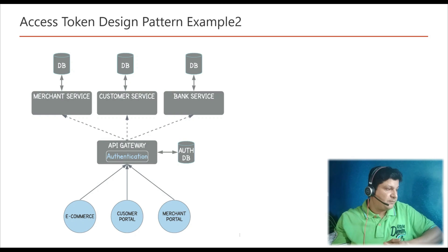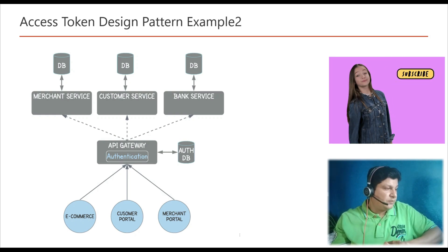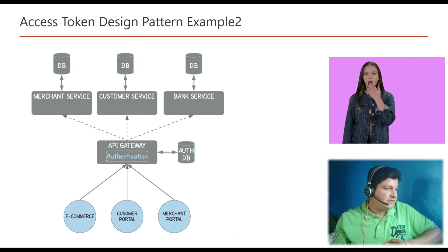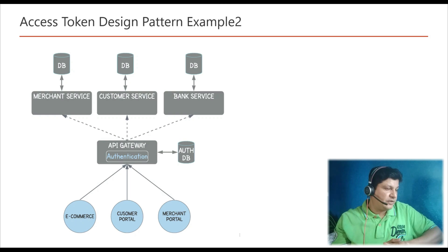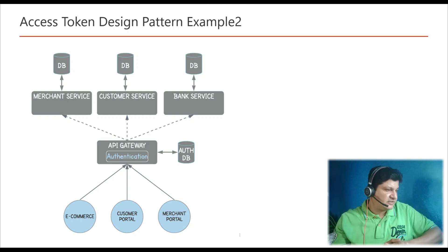It is the responsibility of the API gateway to define a policy and authenticate all incoming requests. The API gateway integrates with an auth DB, which can be any authentication provider — such as Amazon Cognito in AWS or any custom authentication server. All clients first go to the authentication server and request a token. On receiving a token, they send it in a header to the API gateway. The API gateway takes the token from the header and validates it through the authentication server. If the token is valid, the API gateway allows the request to pass through to the respective services.